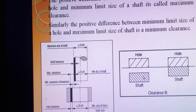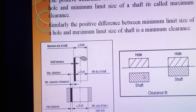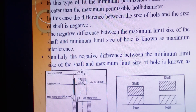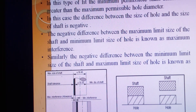So, the first type is clearance fit — when the shaft and hole are assembled with the shaft smaller than the hole, we call it clearance fit. The second type is interference fit. In this type of fit, the minimum permissible shaft diameter is greater than the maximum permissible hole diameter — the shaft diameter is greater than the hole diameter.